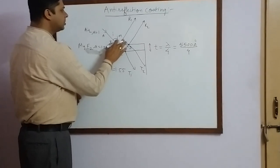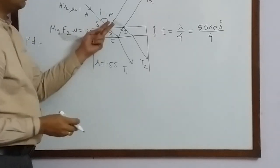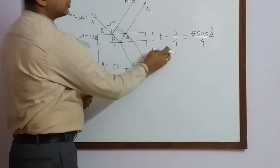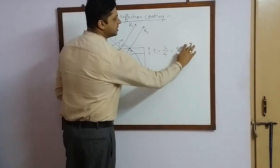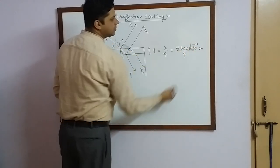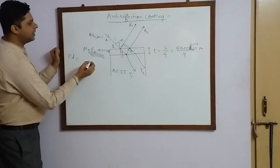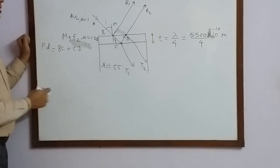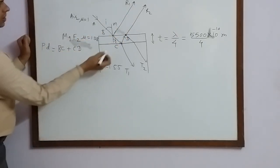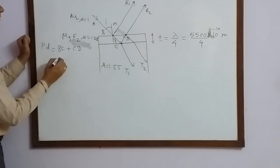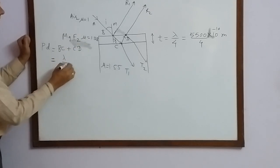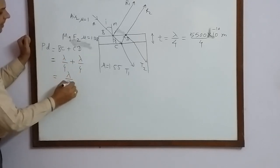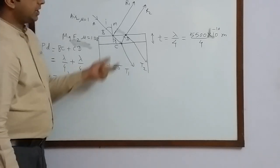There is no need to do elaborate procedures here because the rays emerge parallel and very close to each other. Since the thickness of the MgF₂ film is very small — λ/4, where λ is 5500 Å, which is 5500 × 10⁻¹⁰ meters — the optical path difference equals path BC in film plus path CD in film. Since path BC ≈ thickness = λ/4 and path CD = λ/4, the optical path difference is λ/4 + λ/4 = λ/2.